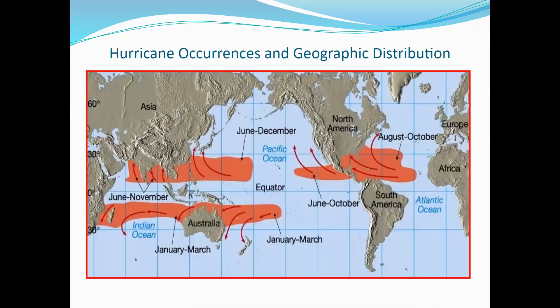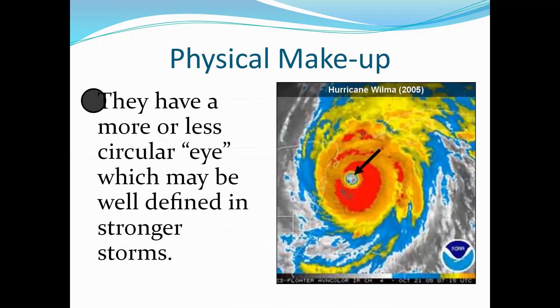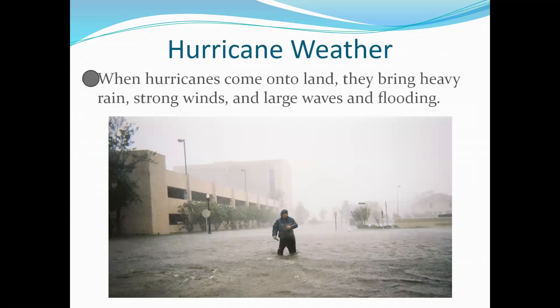This graphic shows you the oceans that hurricanes occur in and the timing. The physical makeup of a hurricane: they have a diameter from less than 100 miles to over 500 miles. They have a more or less circular eye — kind of like the little hole which everything spins around — and it may be well defined in the stronger storms. The weather that hurricanes bring includes heavy rain, strong winds, large waves, and with that, flooding.